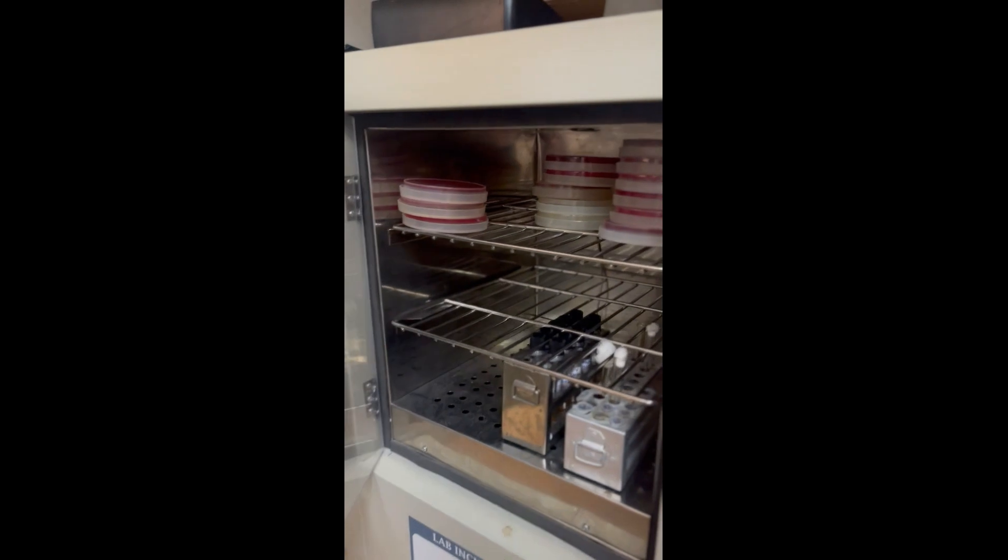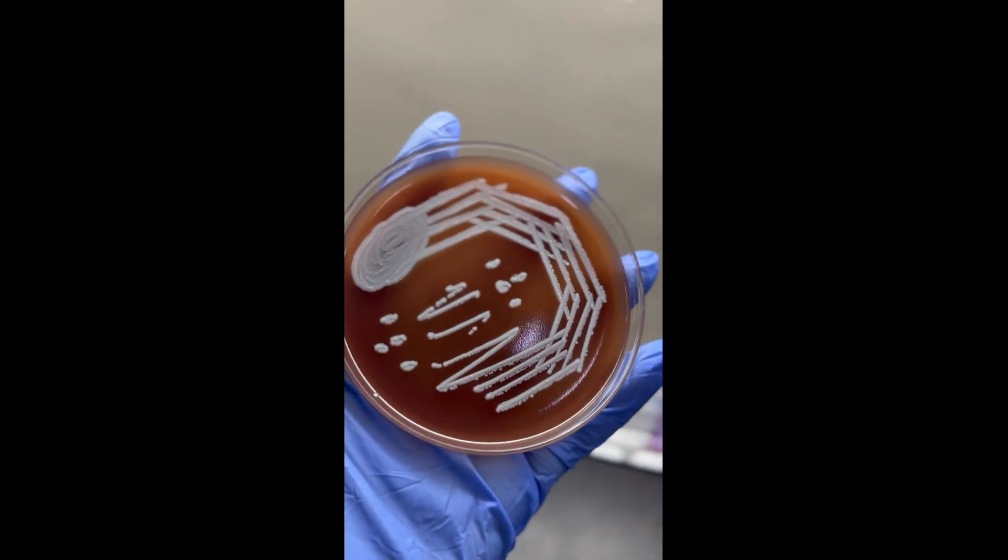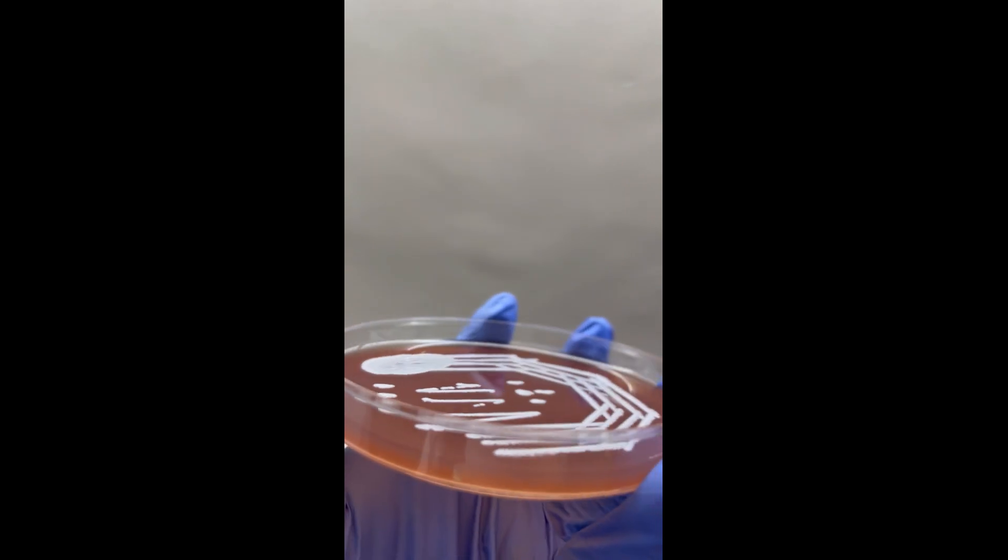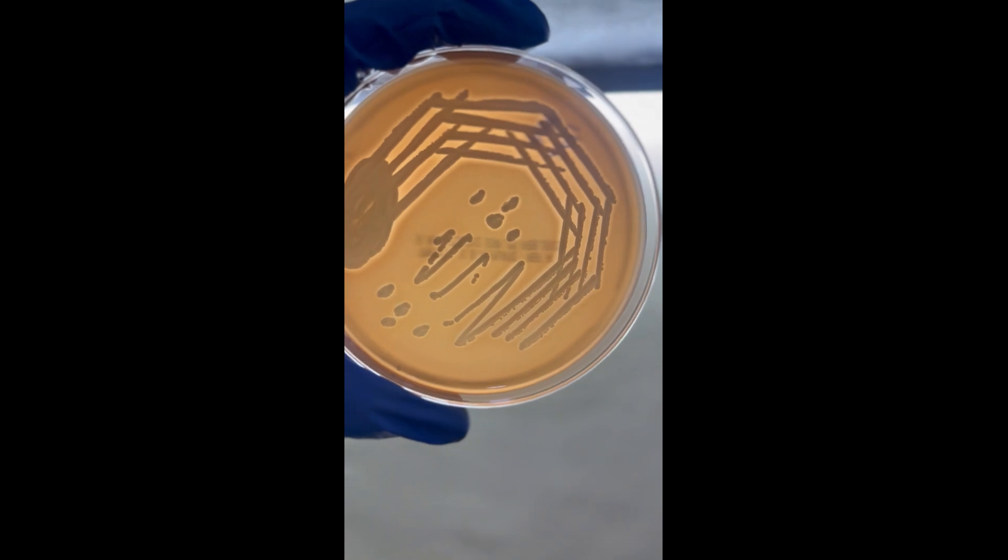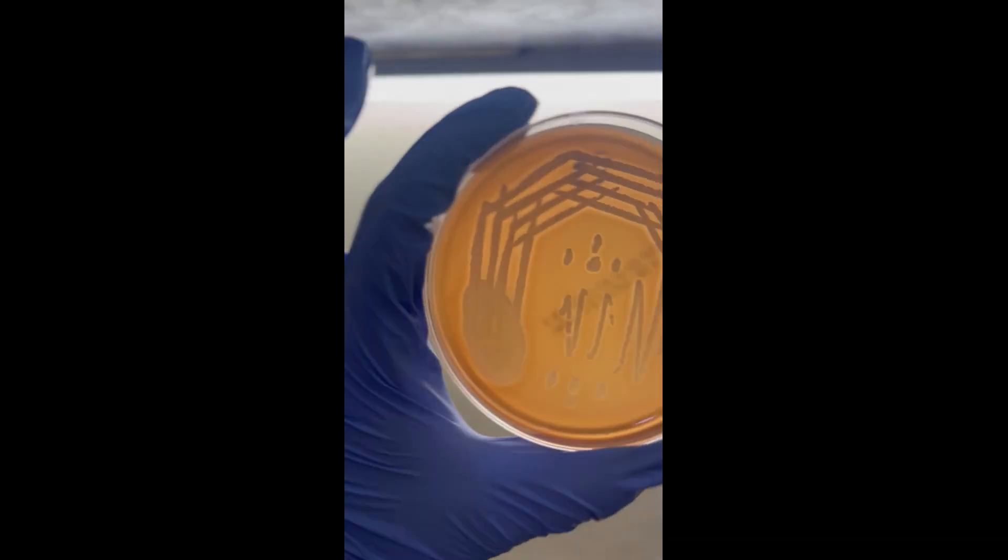Now both blood agar and MacConkey agar are incubated for 24 hours. So after 24 hours you can see for yourself that we have isolated a heavy inoculum of small opaque white colored colonies. These show beta hemolysis. You can see the complete hemolysis around the colonies. That's actually what is needed in a sheep blood agar.